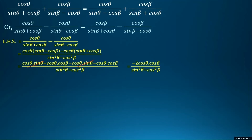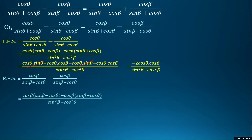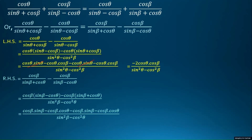After this, we will take the RHS, and on the RHS we will do the same process. We take the LCM and get the combined fraction. Then we multiply inside the bracket by cos θ in the first term and in the second term as well, and we will get this result.